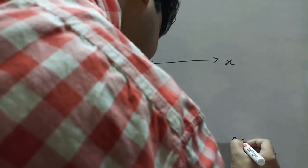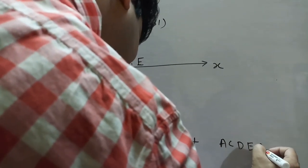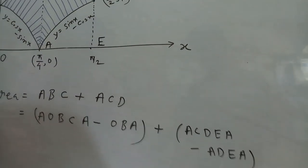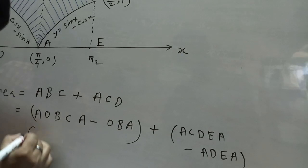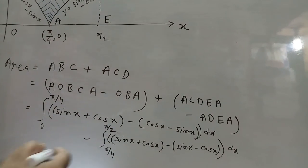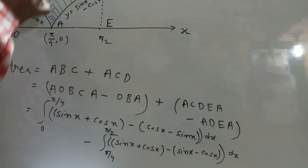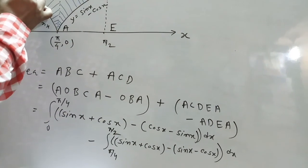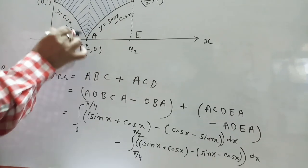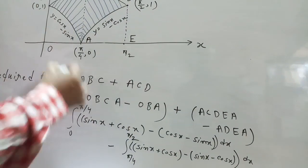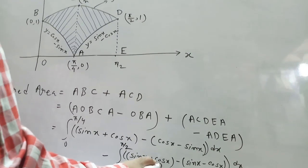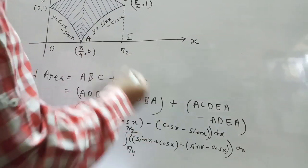Therefore, area ACD = area(ACDEA) minus area(ADEA). So the required area is: integral from 0 to π/4 of (sin x + cos x) minus (cos x - sin x) dx, plus integral from π/4 to π/2 of (sin x + cos x) minus (sin x - cos x) dx.